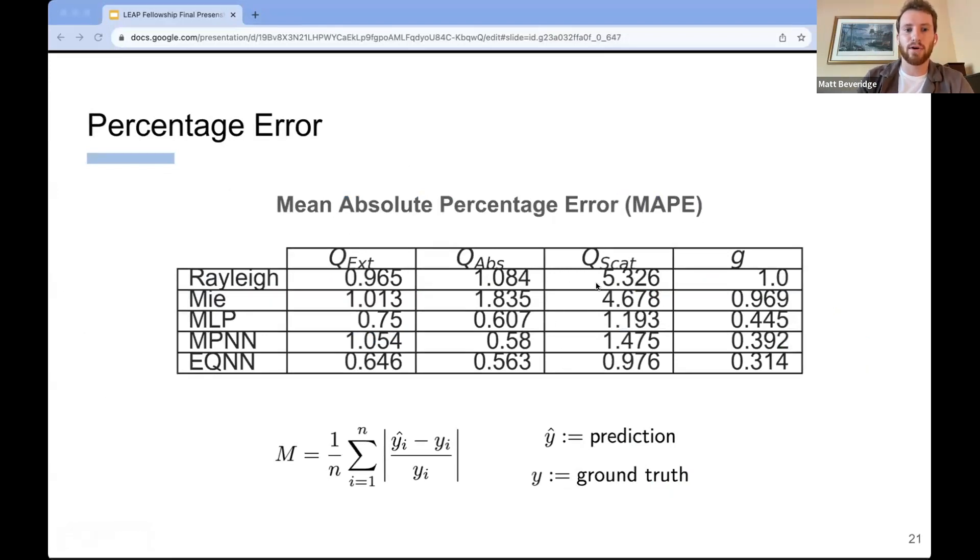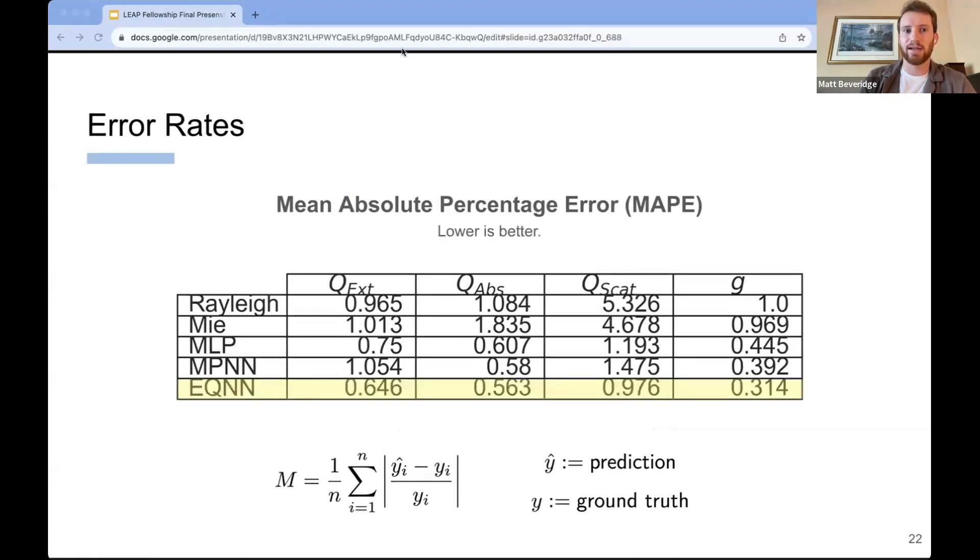Further, one quantitative metric for evaluating the performance of these different baselines is the mean absolute percentage error between the true value and the predictive value for each of these baselines. So we have Rayleigh, Mie, multilayer perceptron, message-passing, and equivariant neural networks, where the mean absolute percentage error is the difference between the predicted ground truth summed over all the samples. As we notice, as expected, equivariance introduces a large performance gain, especially compared to the weaker baselines here, in all parameters that we are interested in looking at. Extinction, absorption, scattering, and asymmetry. All of these are parameters that affect the light scattered, the scattering of the aggregate.